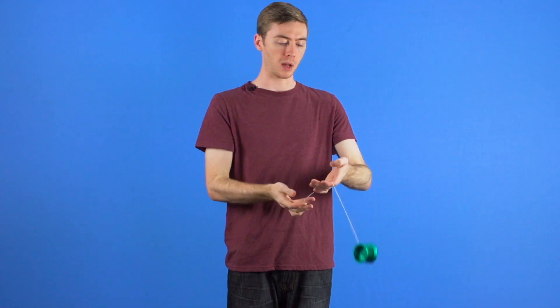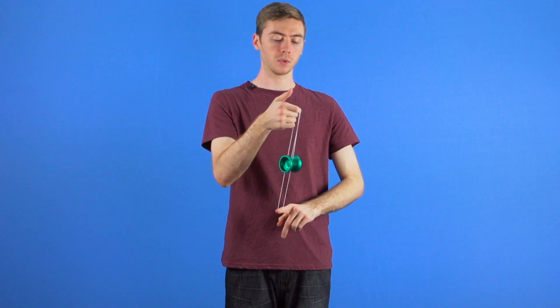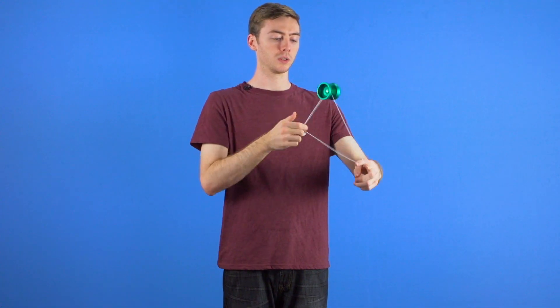A boing is when the yoyo is bouncing in between two parallel strings, whether it be vertically or horizontally.